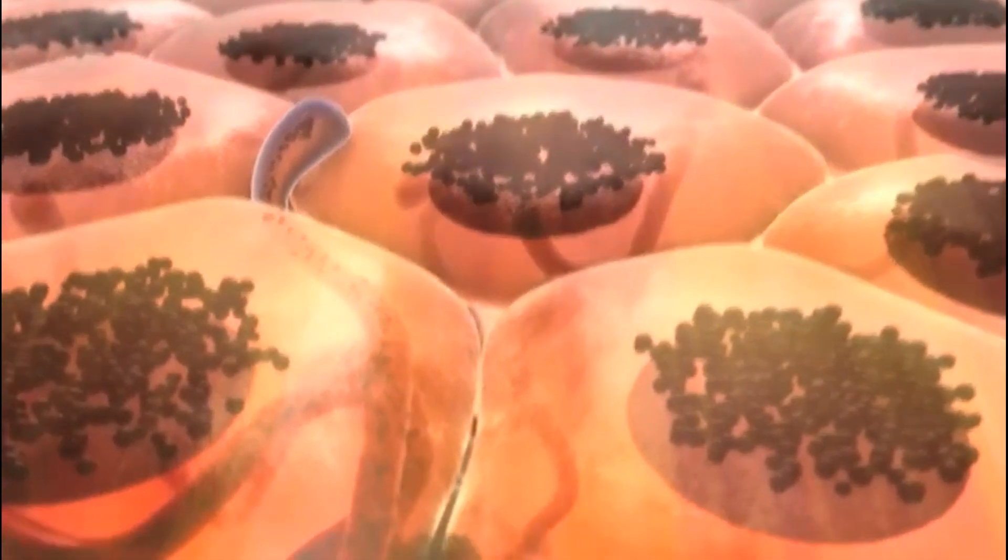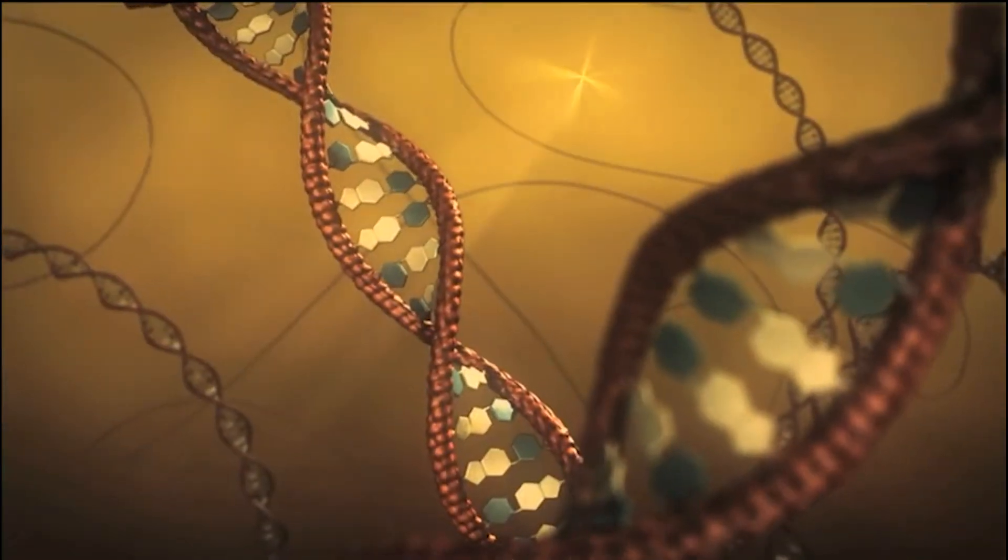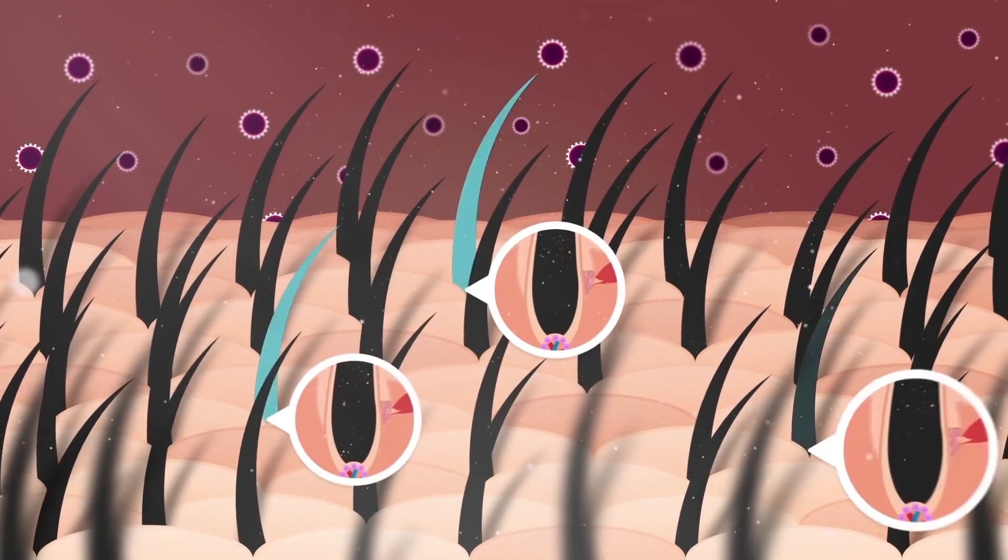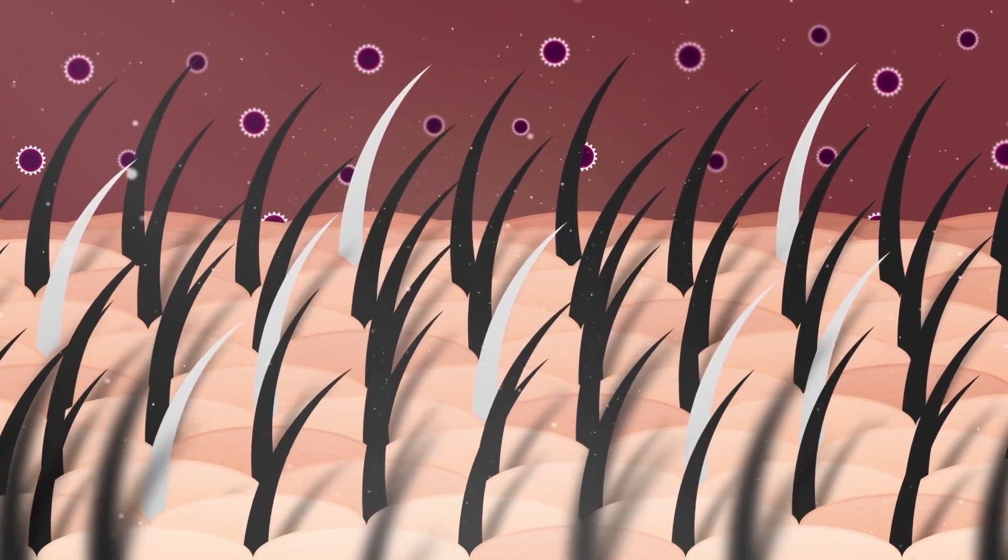But as hair ages, the melanocyte stem cells get sluggish after multiple cycles and become trapped near the base of the hair as immature melanocytes. With no pigment being produced, the hair turns gray. These results provide insight into the mechanisms underlying the graying of hair and could help devise treatments for hair graying.